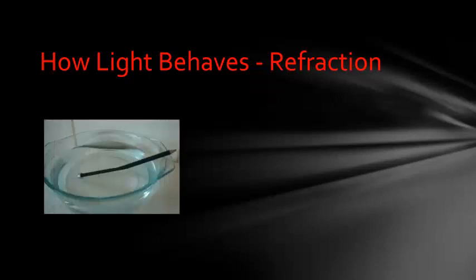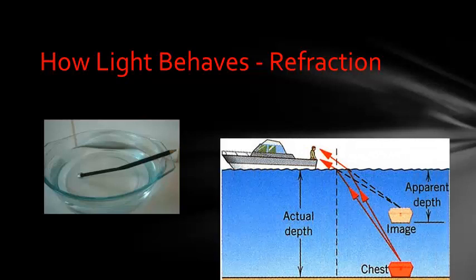When light goes from one transparent material to another, like from air to water, it changes speeds and bends. And this is called refraction. Refraction is what causes the pencil in this example to appear broken. Light travels more slowly through water than it does through air. Refraction is also the reason that the chest in this diagram appears to be closer to the surface of the water than it actually is.